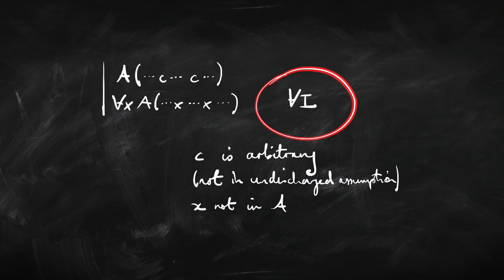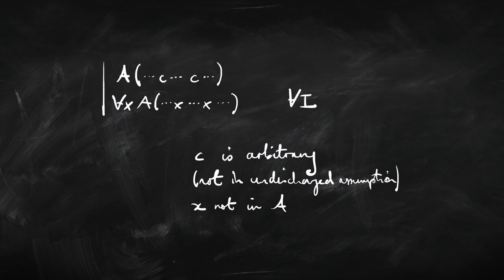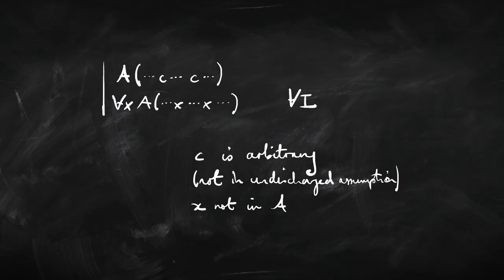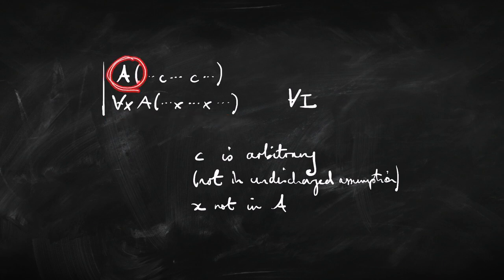The general form of that rule is universal introduction: if you can infer that A holds of an arbitrary name c, then you can infer from that that it holds of everything. C here has to be arbitrary — not included in any undischarged assumption. Also, like in the last case, the x that we pick here can't already occur in A, because if it did it would be a free variable in A but a bound variable in the result.